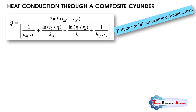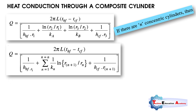If there are n concentric cylinder layers, we can write a universal equation: Q = 2πL·(T_hf − T_cf) / [1/(H_hf·r₁) + Σ(n=1 to N) ln(r_{n+1}/r_n)/K_n + 1/(H_cf·r_{N+1})]. For example, if there are 3 layers there are 3 separate conduction resistances to calculate; if there are 4 layers, n equals 4 resistances. The last term 1/(H_cf·r_{N+1}) represents the convection resistance between the outer layer and the surrounding atmospheric air.